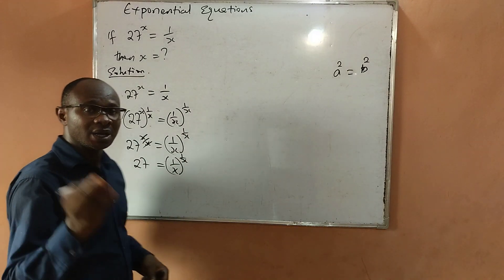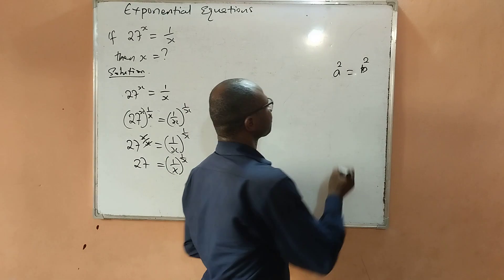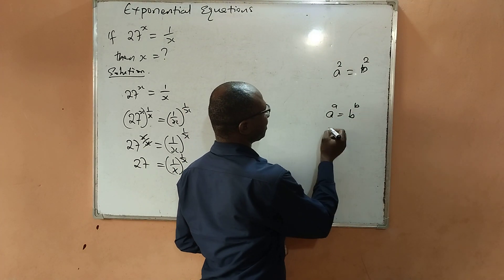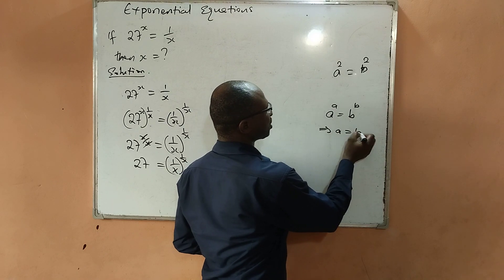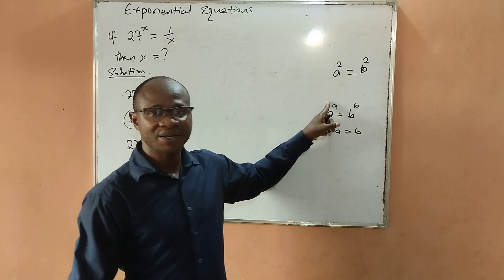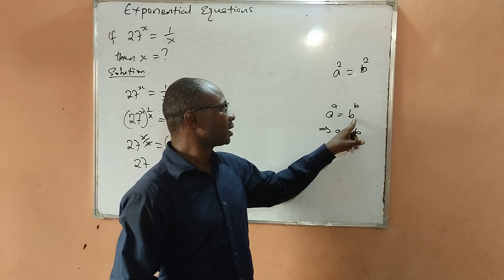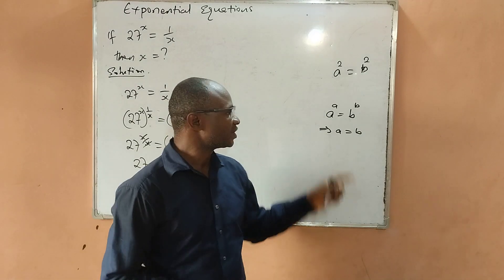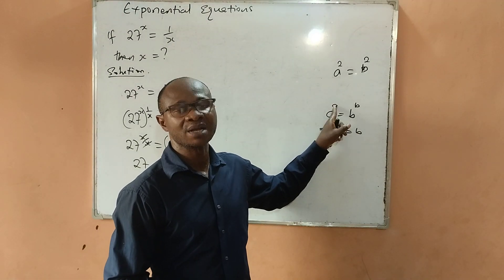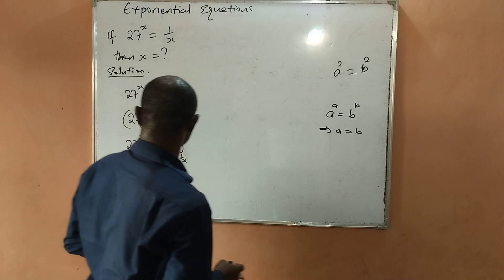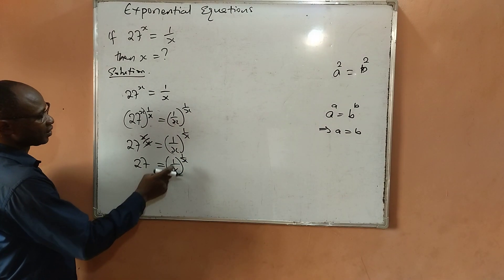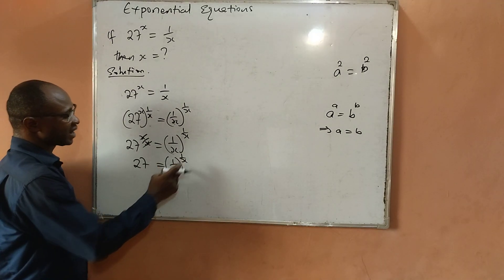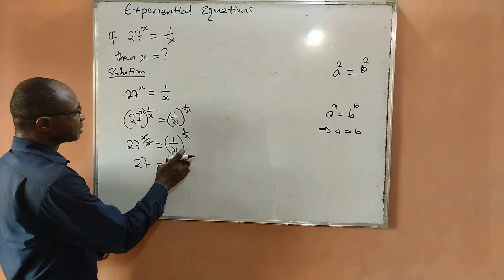In indices, when you have a to the power of a equal to b to the power of b, it implies that a is equal to b — when the base and the power are the same. This means the base on the left equals the base on the right, and the power on the left equals the power on the right. Since we have 1 over x as the base on the right-hand side and the power is also 1 over x, this law will apply.